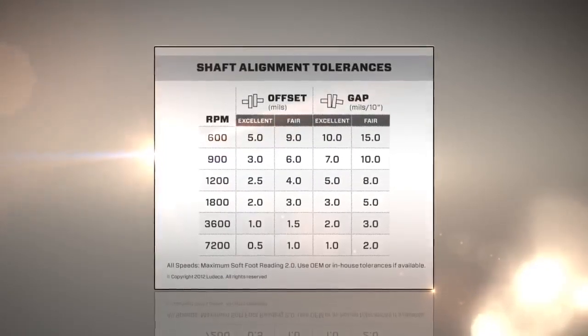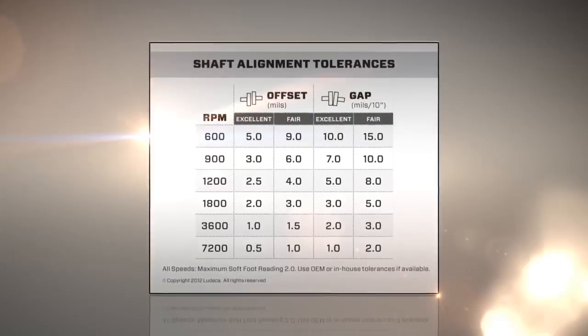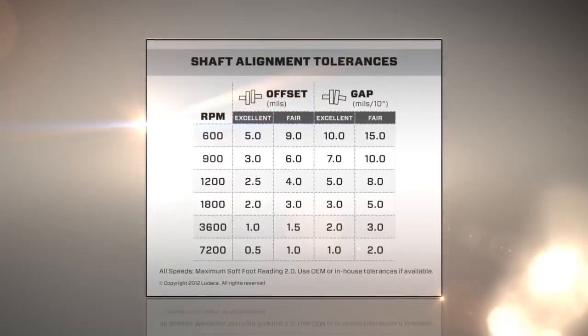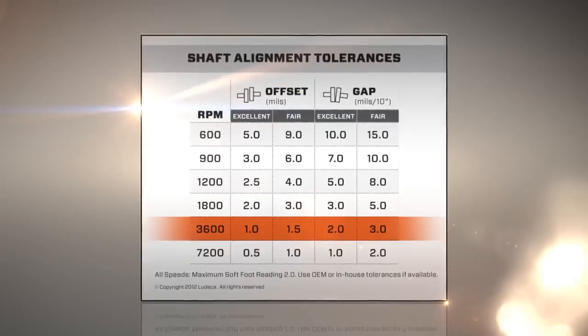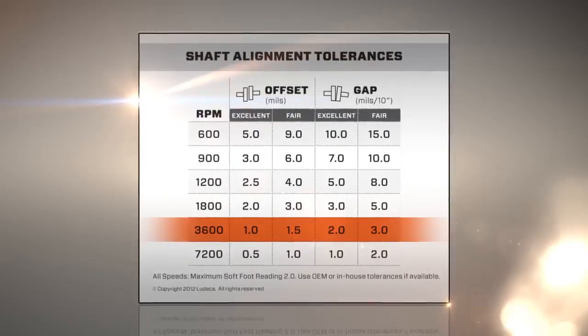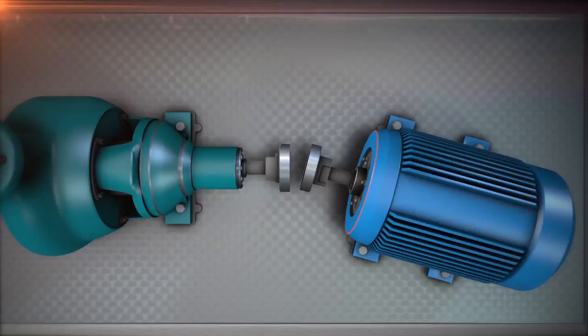Because alignment is so important, tolerances were developed to define the most misalignment you can have and still be okay. We will explain about these tolerances in a future video. If this was a 3600 RPM motor, these would be the tolerances.